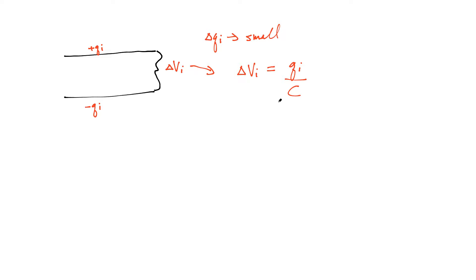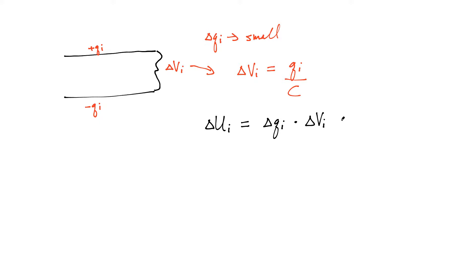Now the potential energy: if I'm transferring this small amount of charge, delta QI, across a potential difference of delta VI, the amount of work done by the battery in this particular case — let's call it delta U — is simply the amount of charge transferred multiplied by delta VI. The potential difference delta VI comes from our capacitance equation; it's proportional to the charge QI divided by the capacitance C.